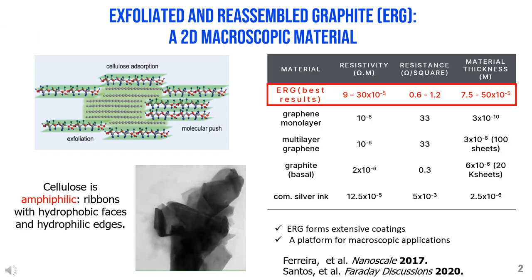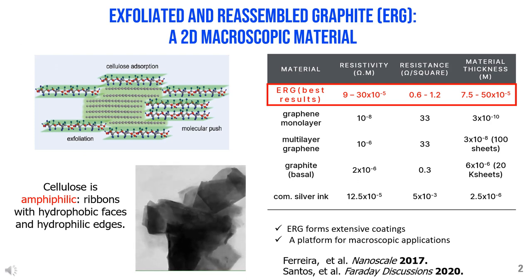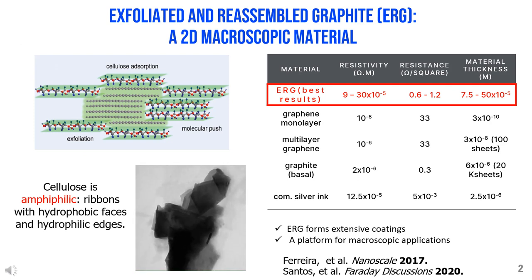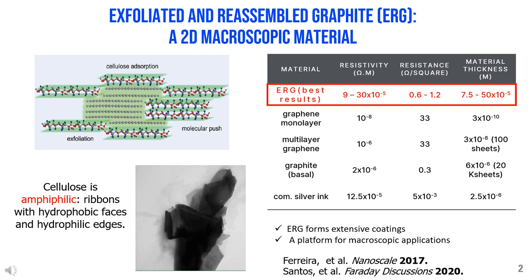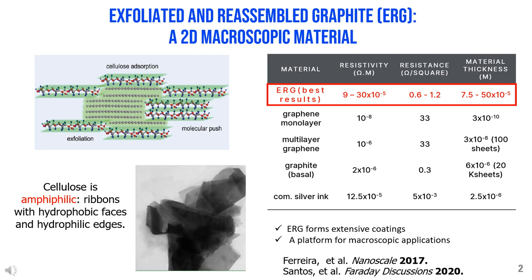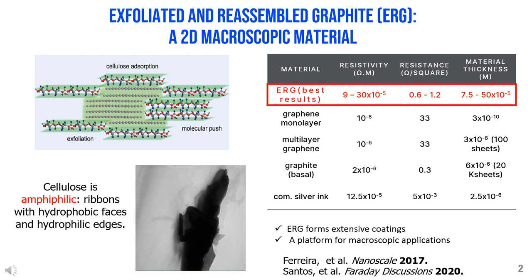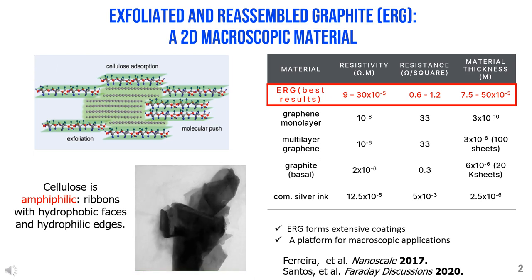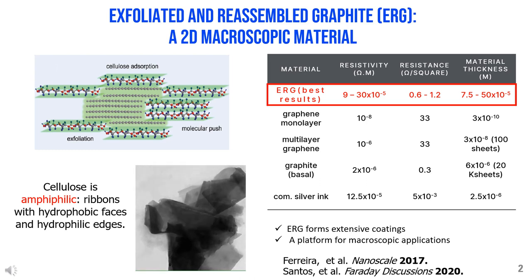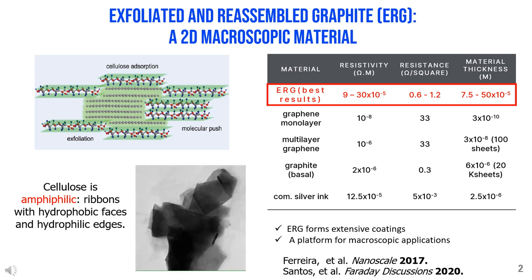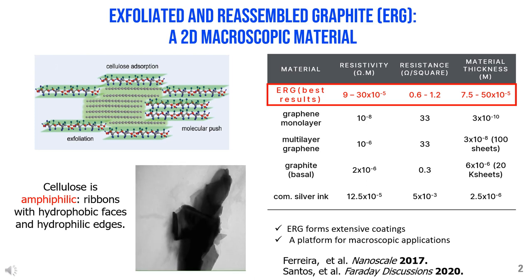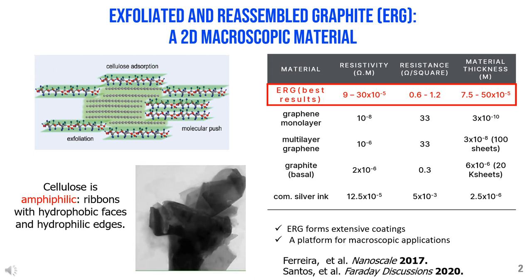Discovering ERG resulted from exploring the hypothesis presented by Bjorn Lindemann earlier in the century on the amphiphilic character of cellulose. Cellulose is known as a hydrophilic solid, but it is also oleophilic. Its amphiphilic character derives from the structure of cellulose chains, with flat hydrophobic surfaces surrounded by hydrophilic edges. This singular structure allows cellulose chains to absorb on graphite flat surfaces, dismantling the crystals.